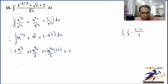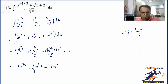Simplifying a little further: 3x raised to the power 1/3, plus 6/7 x raised to the power 7/6, plus — the 2s cancel — 3 times x raised to the power 2/3, plus C. That can be treated as the final answer.